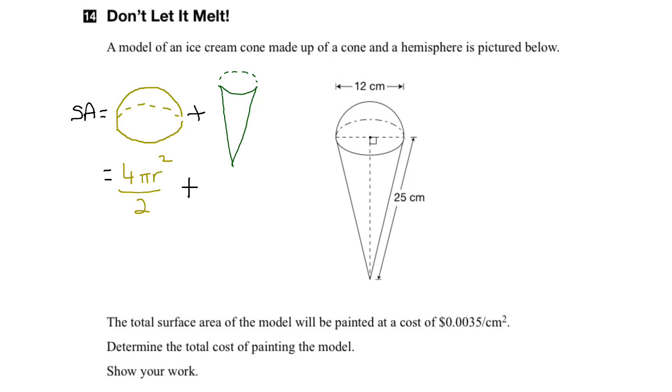And the formula for the lateral surface area of a cone is given by the formula πrs, where s is the slant height, which is this part here, and r is the radius, this part here.